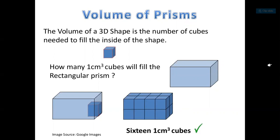So how many one-centimeter cubes will fill the rectangular prism? If it needs 16 one-centimeter cubes, then the volume of the rectangular prism is 16 centimeters cubed.